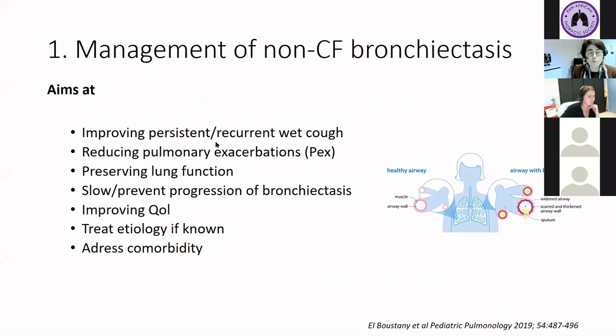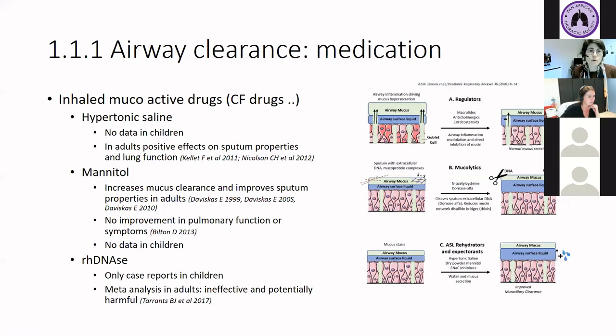What is the aim of the management of non-CF bronchiectasis? We want to reduce the persistent or recurrent wet cough. We want to reduce pulmonary exacerbations because of their impact on quality of life, but also on lung damage and lung function. So we want to preserve lung function as much as possible and try to slow or prevent the progression of bronchiectasis and lung damage. If we find the etiology, we can also treat the etiology and address comorbidity.